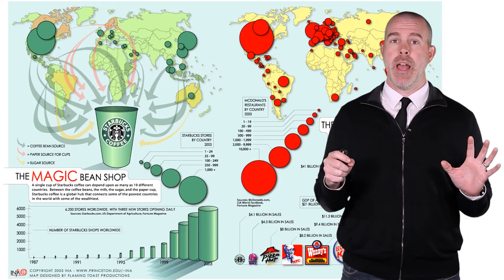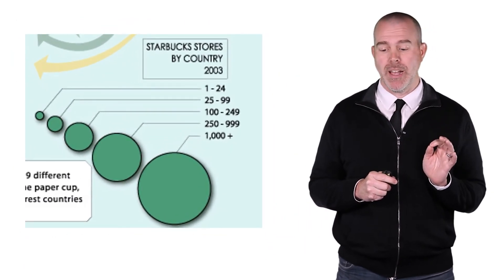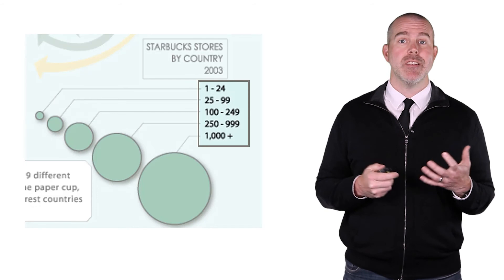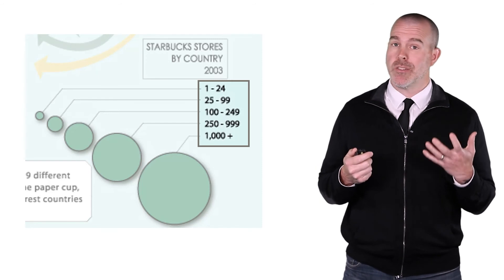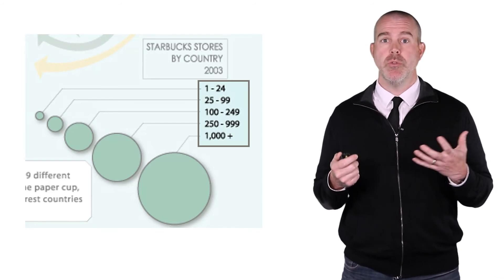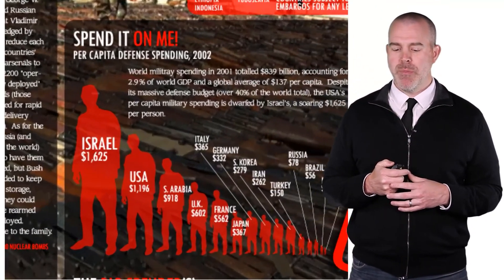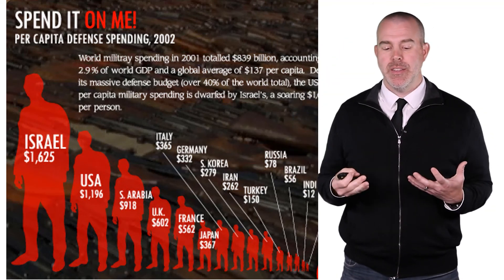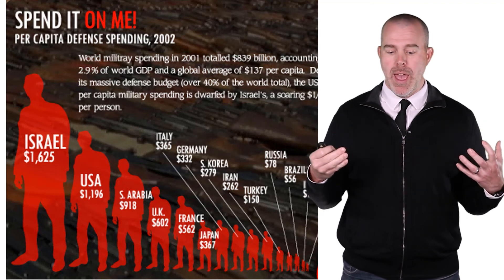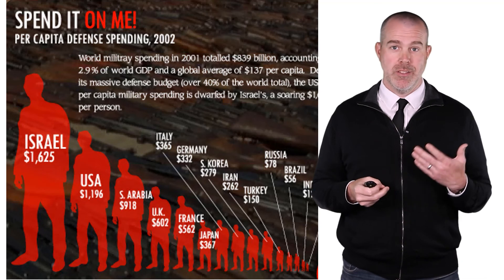Here's an infographic about number of Starbucks stores by country using circles again, with a huge scale from 1 to 24, then 25 to 99 — you'd be better off making the circle proportional to the number. The last example is about military spending, where individual figures are stretched in height, making Israel look two to two-and-a-half times the spending of the US. It's certainly more, but it's not that much more.